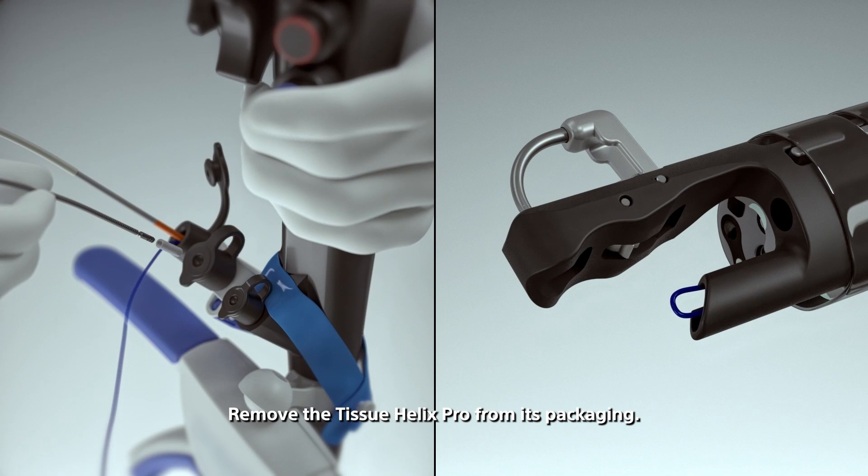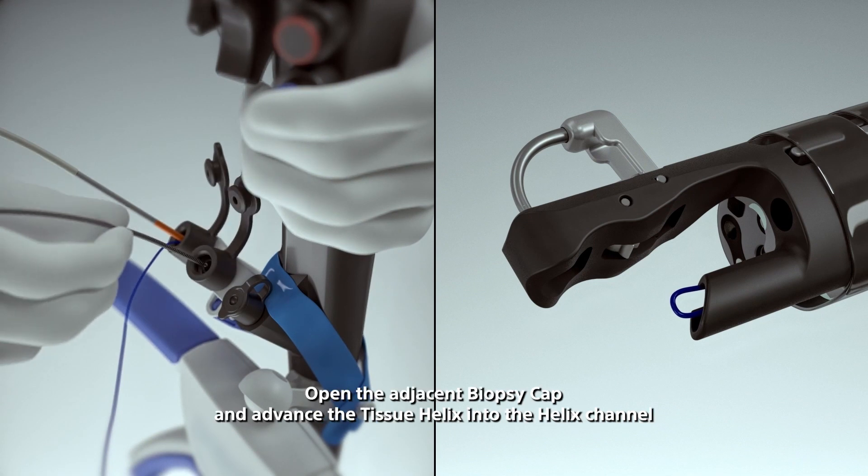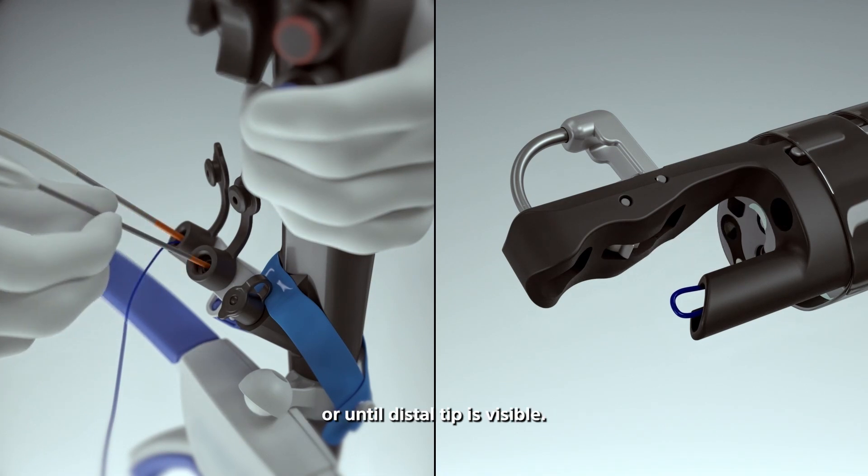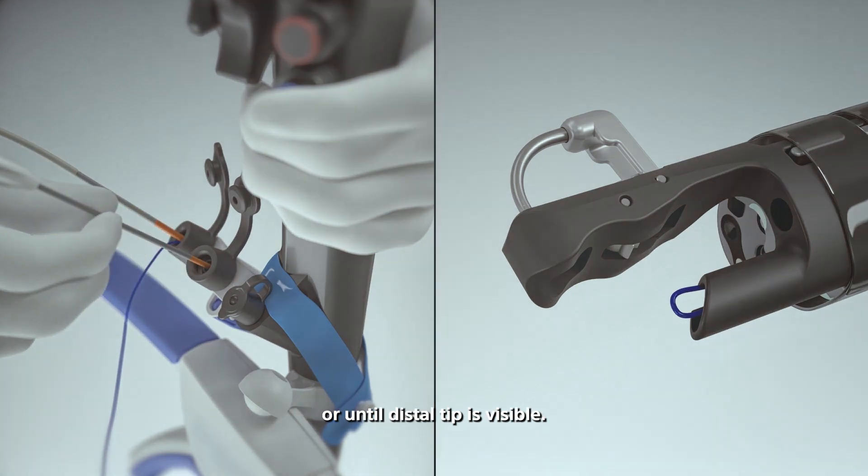Remove the tissue helix pro from its packaging. Open the adjacent biopsy cap and advance the tissue helix into the helix channel until orange depth marker band is at entry of biopsy cap or until distal tip is visible.